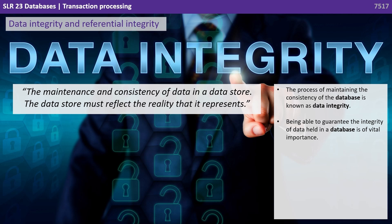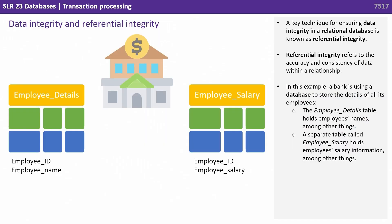Being able to guarantee the integrity of the data held in a database is of vital importance. A key technique for ensuring data integrity in a relational database is known as referential integrity, which refers to the accuracy and consistency of data within a relationship.